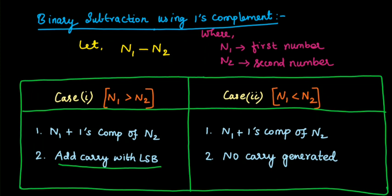Coming to Case 2, when n1 is less than n2. Step 1: n1 plus one's complement of n2. Step 2: no carry is generated.